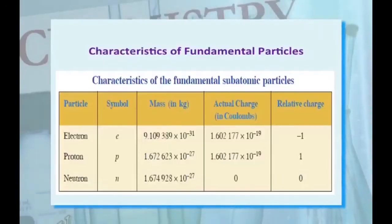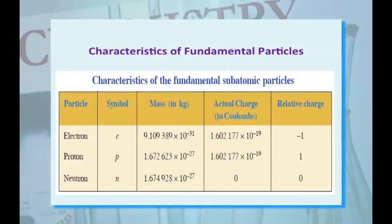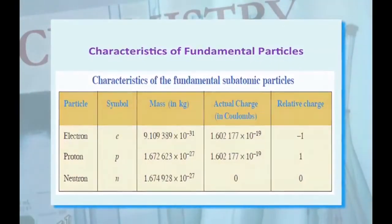Characteristics of fundamental particles: This table shows the different particles — electrons, protons and neutrons — along with their symbols, mass, charge, and actual charge values in the respective columns.